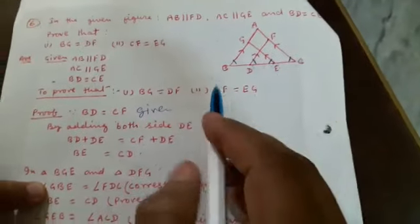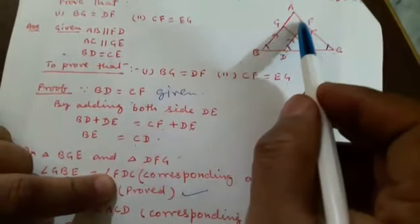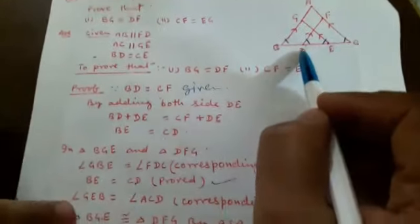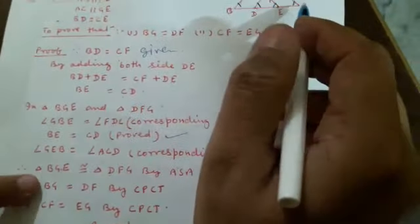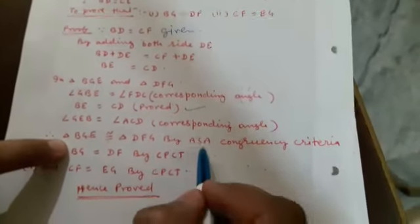Now in triangle BGE and triangle DFG: angle GBE is equal to angle FDC as corresponding angles because both pairs of sides are parallel; BE is equal to CD as established; and angle GEB is equal to angle FDC as corresponding angles. Therefore triangle BGE is congruent to triangle DFG by ASA congruency criteria.